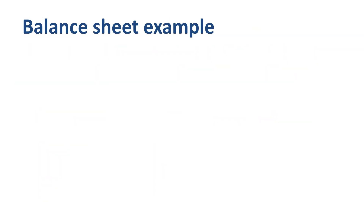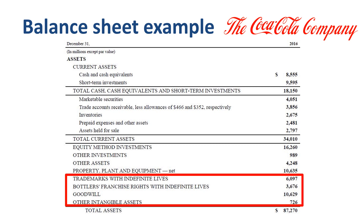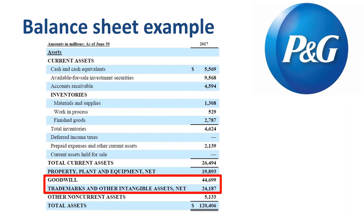An example of a company with substantial intangible assets is the Coca-Cola Company. On their December 31st, 2016 balance sheet, almost 25% of the balance sheet total is in intangible assets such as trademarks, bottler's franchise rights, and goodwill. Procter & Gamble has 57% of the balance sheet total in intangible assets at the end of their fiscal year 2017, on June 30th, 2017, split between $44.7 billion in goodwill and $24.2 billion in trademarks and other intangible assets.